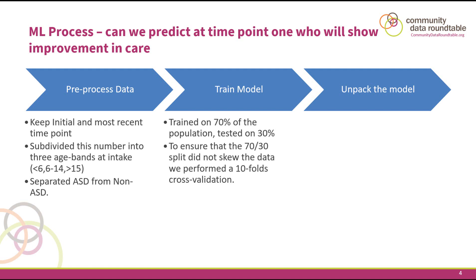We used what's called a gradient boosting classifier — that's the kind of machine learning model we use. We send it into 70% of our data in ten different ways to make sure that we're not finding any irregularities in the data that are biasing us, and we're able to then predict profiles at the next time period.